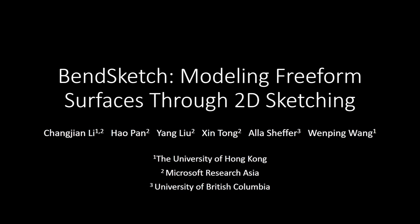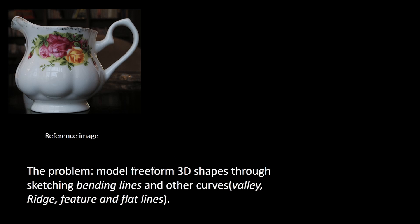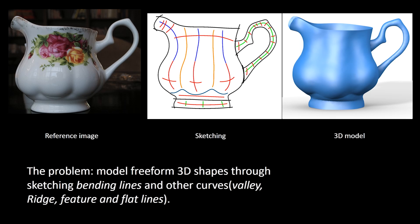We present a sketch-based approach for modeling 3D freeform shapes called BendSketch. Suppose we have a reference image depicting a 3D freeform object. Using our approach, the user can draw a few curves called bending lines as well as boundary contours, and a 3D model that's very close to the reference object is constructed automatically by our method.